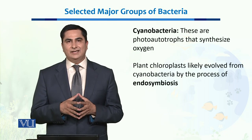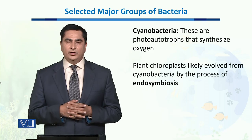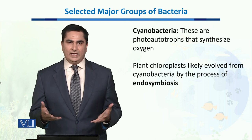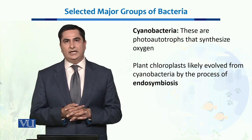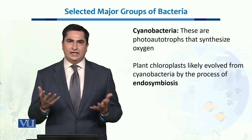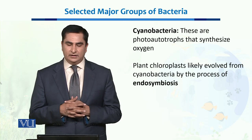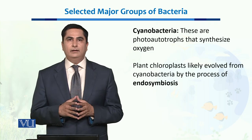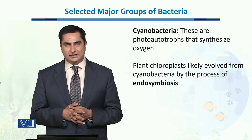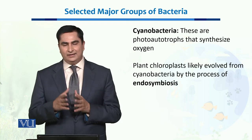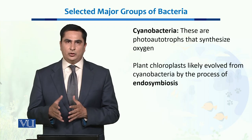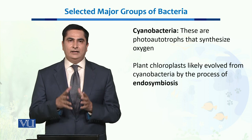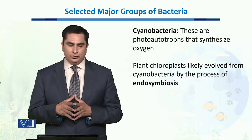Cyanobacteria is another major group of bacteria which helps in the accumulation of oxygen on this planet in different ecosystems. They are basically photoautotrophs — they synthesize oxygen and their own food just like plants do. There is a strong theory that plant chloroplasts are likely derived from cyanobacteria, which through the process of endosymbiosis became incorporated into plant cells, enabling plants to perform photosynthesis.